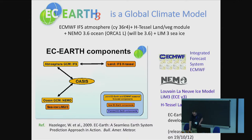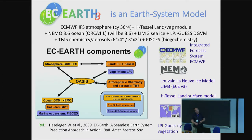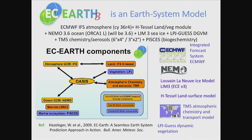EC-Earth also has a mission and is being developed as an Earth system model. Other components are ready and have been coupled to the model. We have a dynamic vegetation model, and there's an interactive atmospheric aerosol and chemistry module TNT, which is based on TM5. The dynamic vegetation is LPJmass. There's also a biogeochemistry model for the ocean. Basically all these components have been under heavy development and coupled to EC-Earth in the past years.